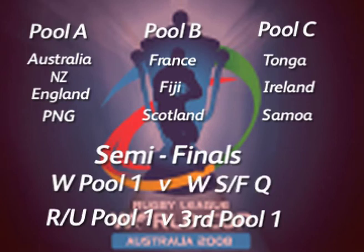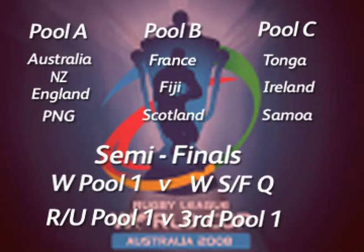There are three nations in Group B and three nations in Group C. The top team from Group B and C will then play off for that one remaining spot in the World Cup semi-finals. Then the whole World Cup is down to four. It should be a blockbuster of a tournament.